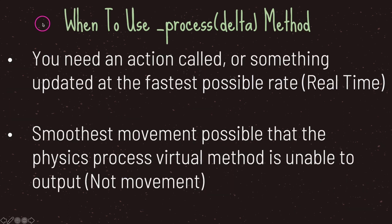When do we use the process virtual method? If you need action code or something updated at the fastest possible rate, you'll have that logic inside the process virtual method. An example would be real-time gaming or multiplayer. Another reason to use process is when you want the smoothest movement possible that the physics process virtual method is unable to provide.